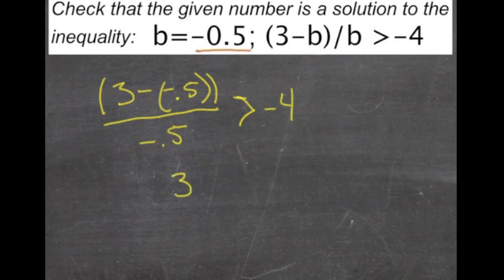And we still have our negative 0.5 on the bottom, is greater than negative 4. 3.5 divided by 0.5. If we're dividing by a half, that's the same as multiplying by 2, so 3.5 twice would be 7.